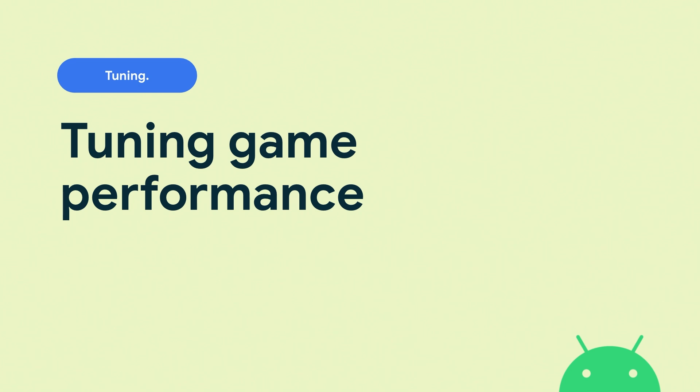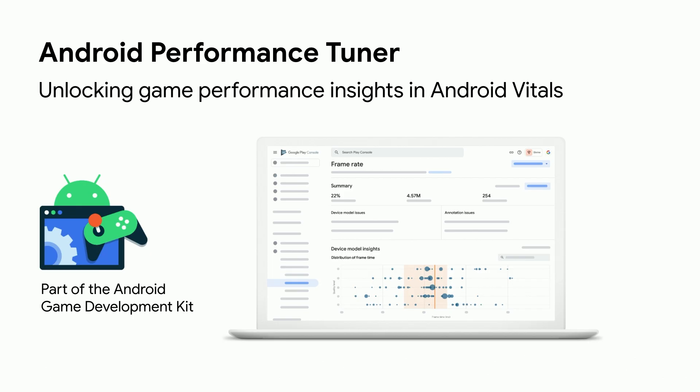Now we've covered getting your game functional across a wide range of hardware, with reasonable density choices, optimized textures, and more. In parallel with this work, it's important to be measuring performance so you can see how your choices are paying off and what you should focus on next to target the widest user base. Android Performance Tuner, or APT, is also part of the Android Game Development Kit libraries. It unlocks game performance insights within Android Vitals, giving you a way to both measure and optimize the graphical fidelity, loading time, and frame rate of your game across the Android device ecosystem, all on real devices with real users.